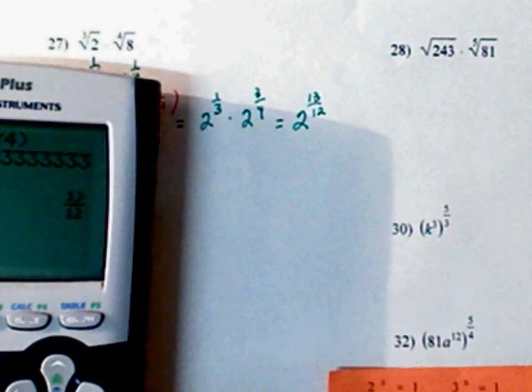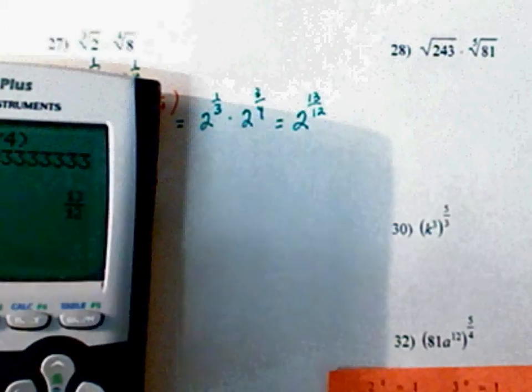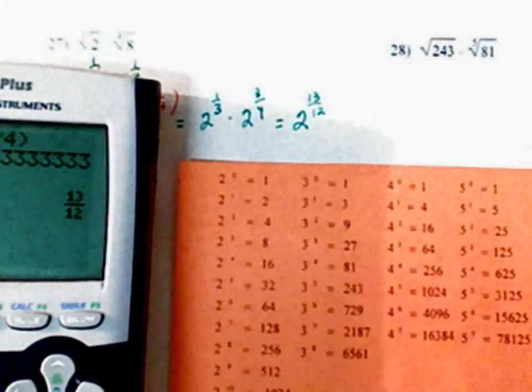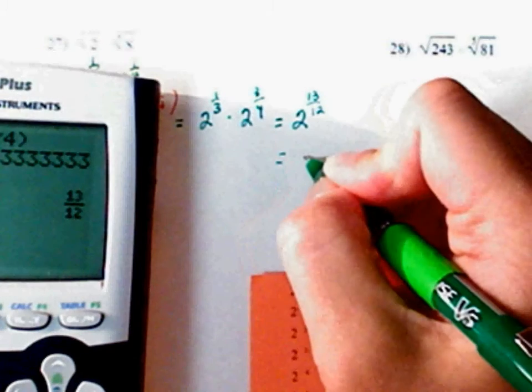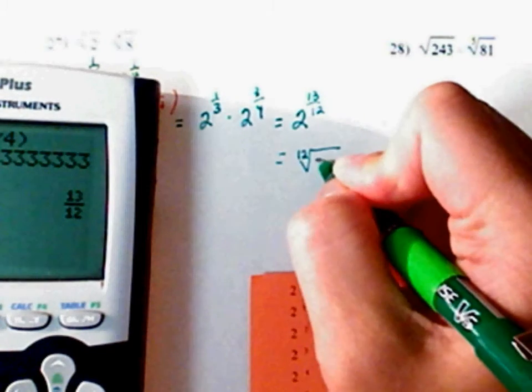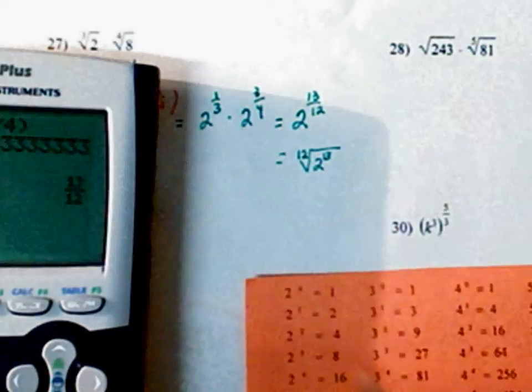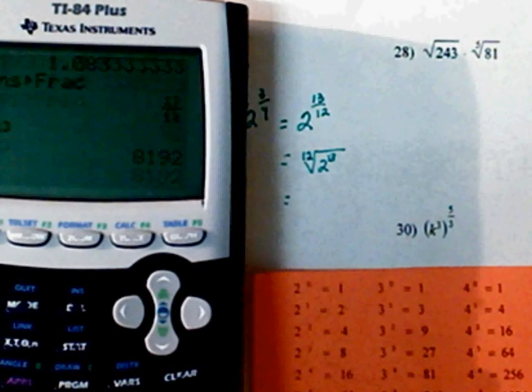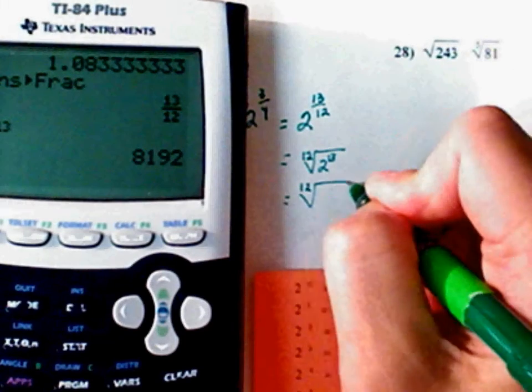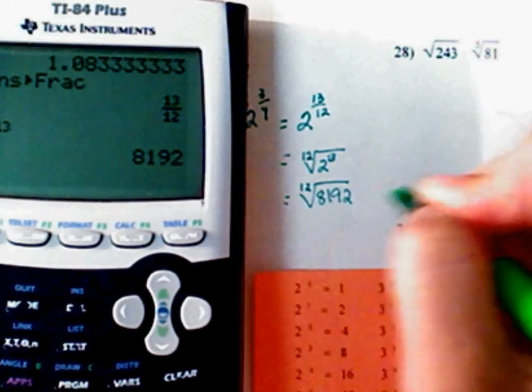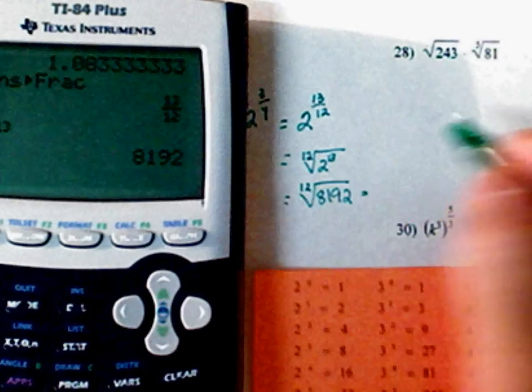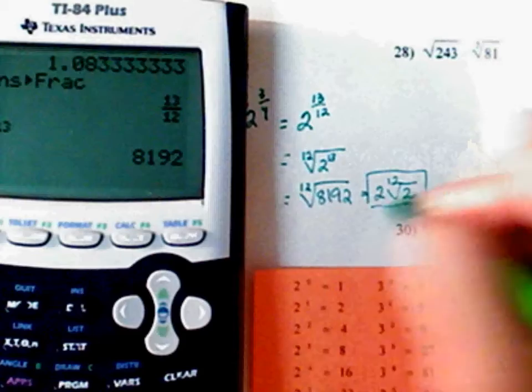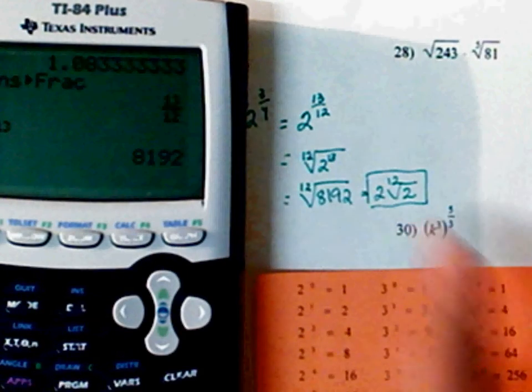Now you could somehow make this smaller if you want to. But for now, that's such a big number that's not on here. I will leave it like that. But actually, this is the same as the 12th root of 2 to the 13th. 2 to the 13th power is the 12th root of 8192. And if you break it down, this comes out to be 2 times the 12th root of 2. I will take either one.